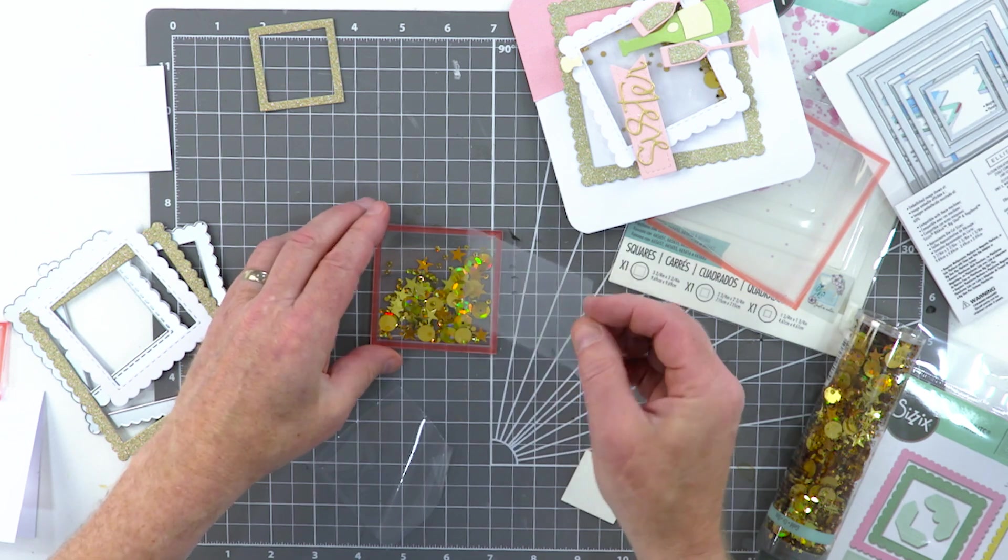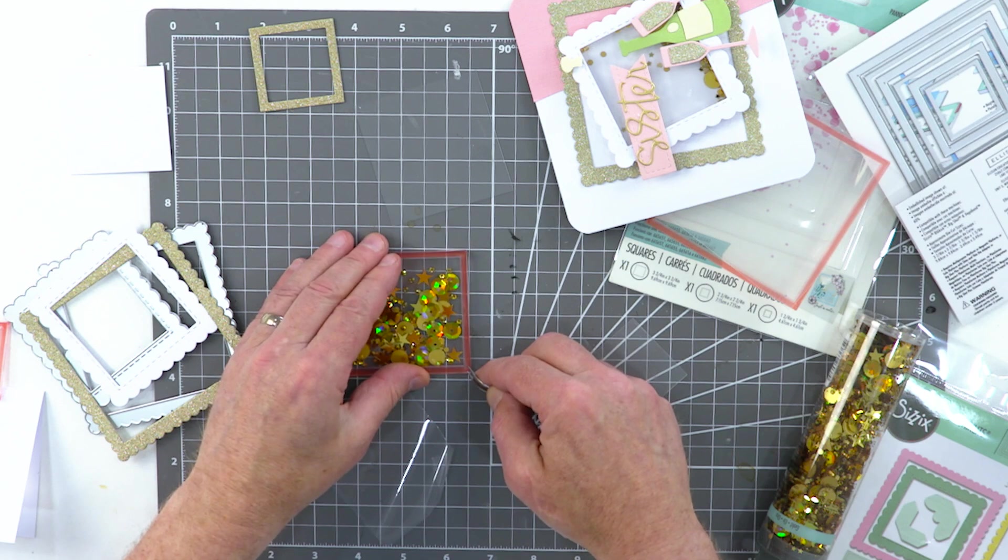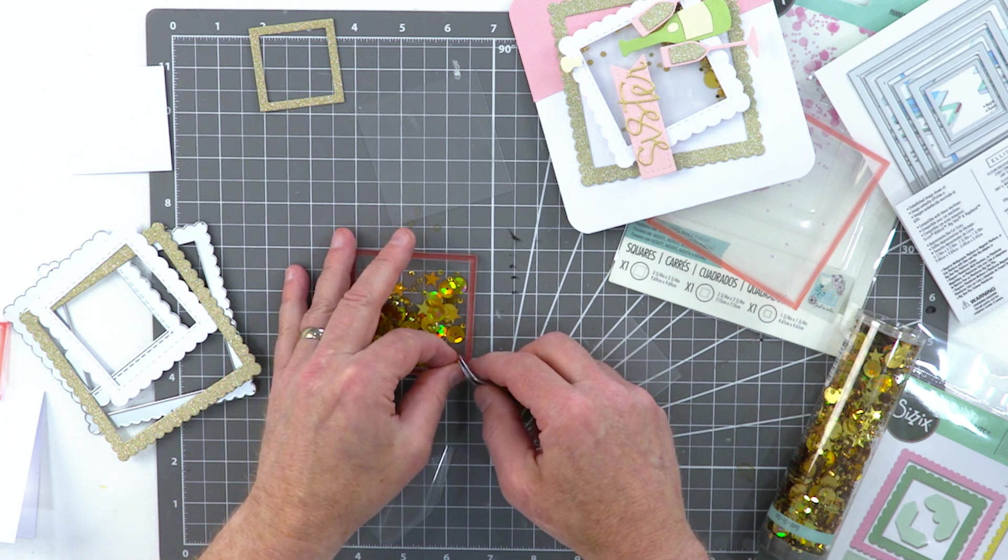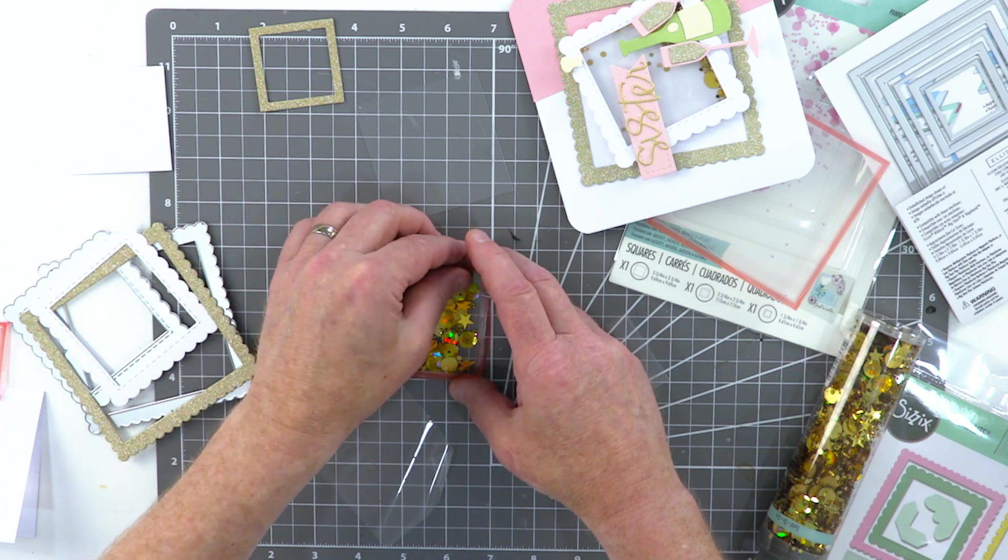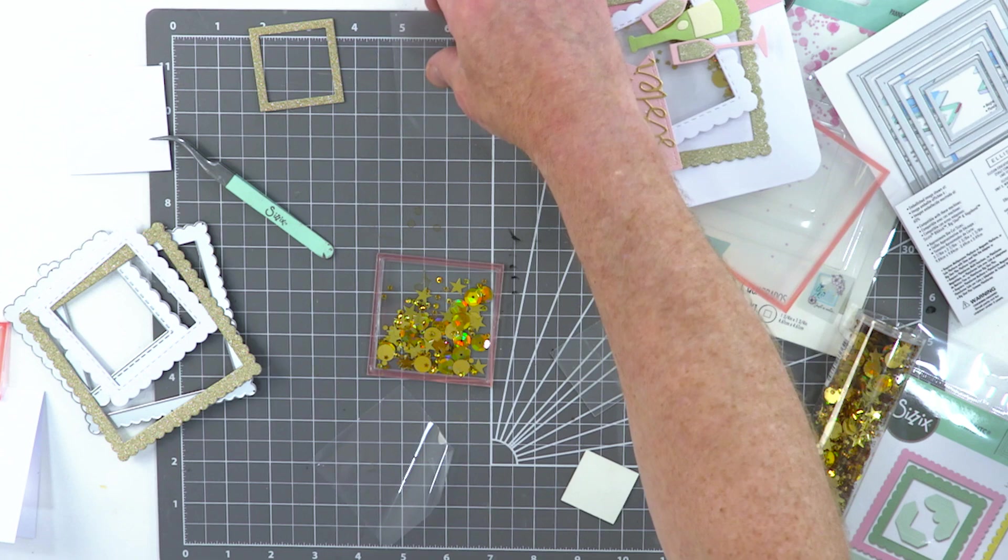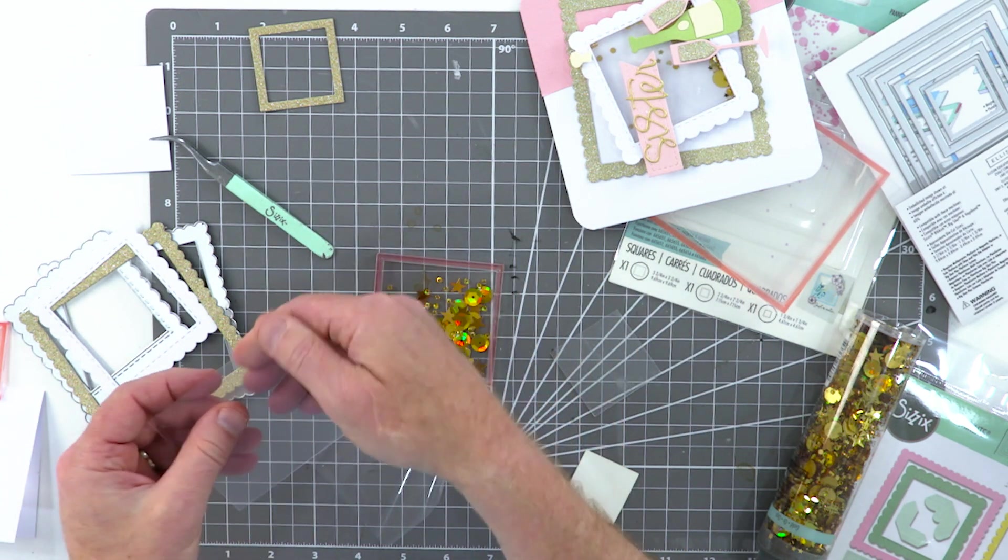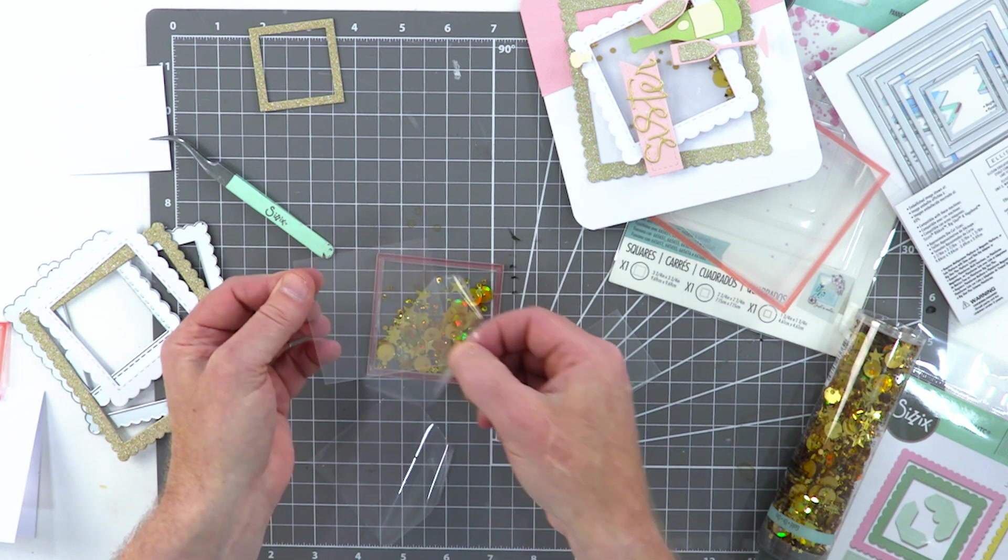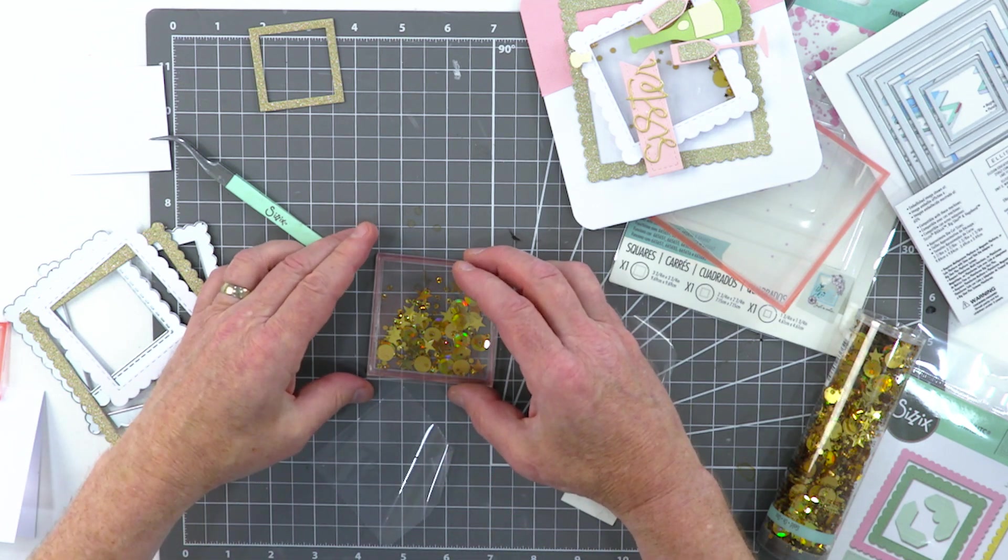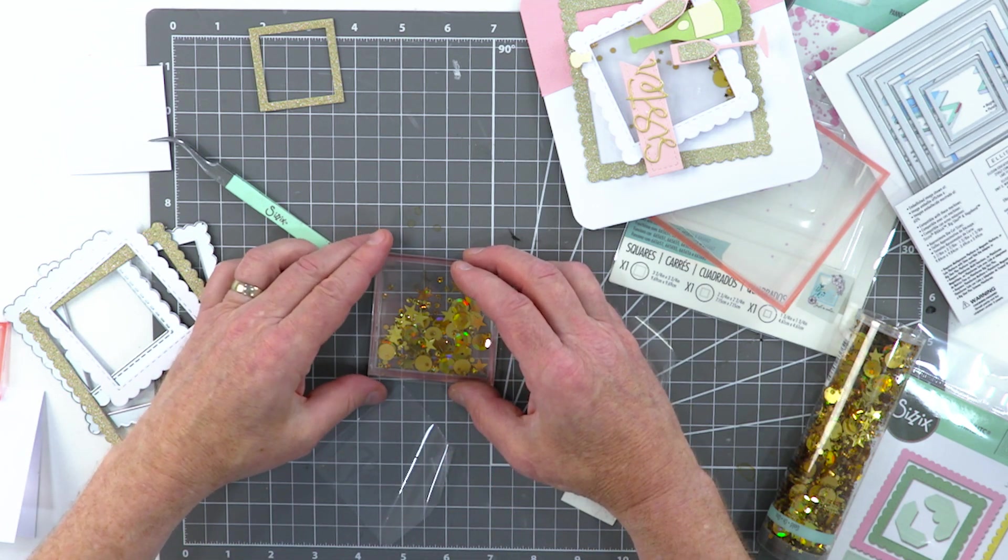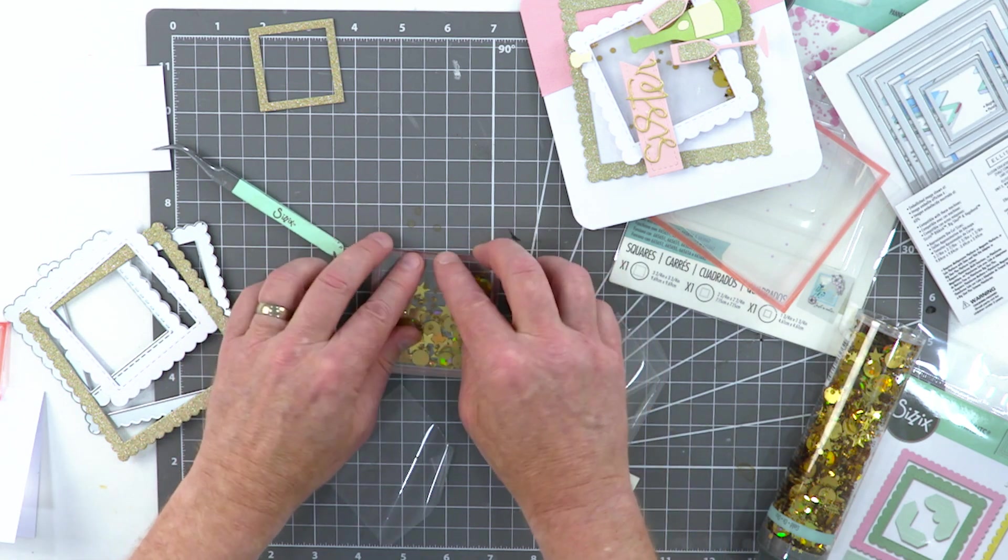And then next up we have these acrylic sheets which are specifically sized to work with the individual shaker panes. They come obviously with the shaker panes, and I just peel away that backing and I can place the acrylic sheet on the top.